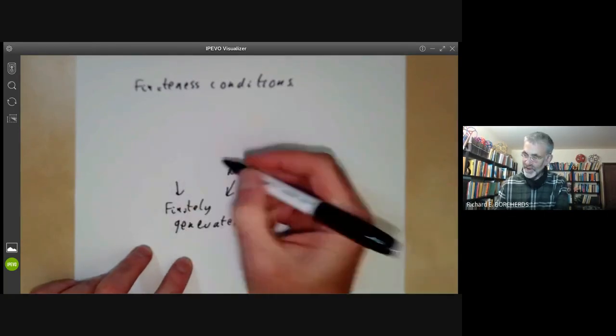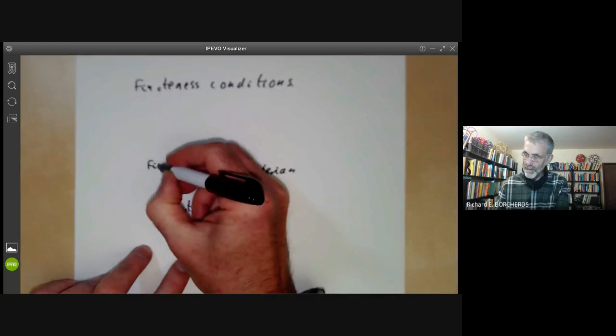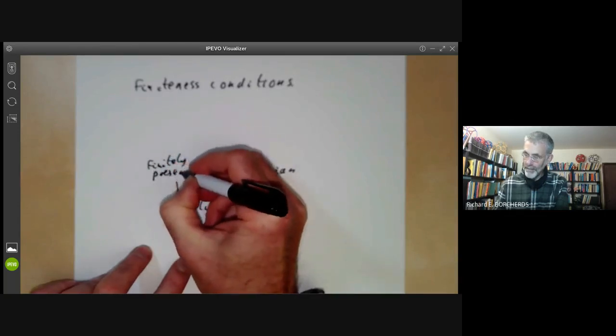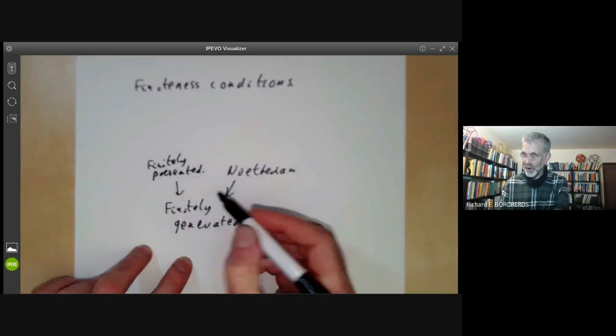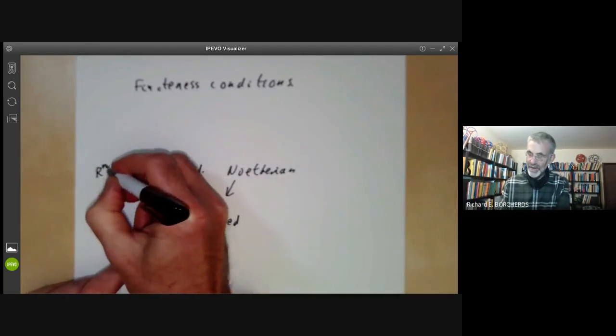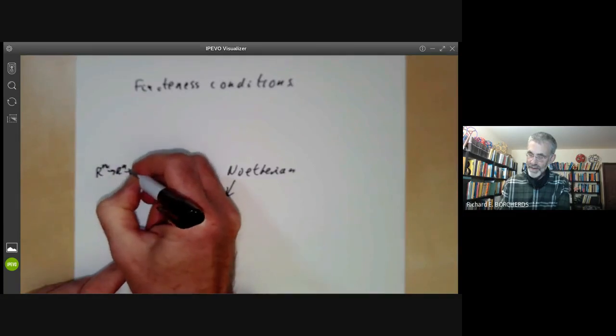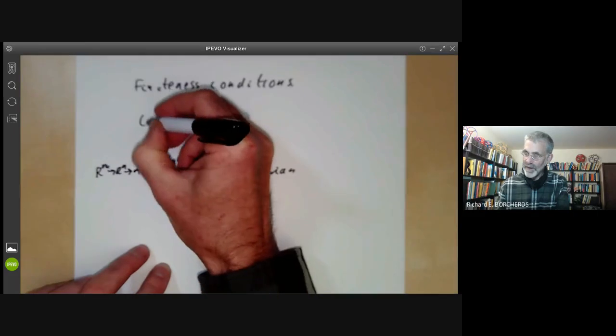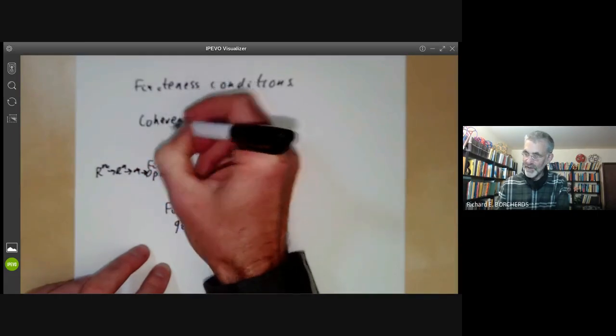There's also a condition that a module can be finitely presented, which again has a fairly obvious meaning. This just means there's a map from R^m to R^n to M to zero. And there's a slightly more technical condition that says a module is coherent.